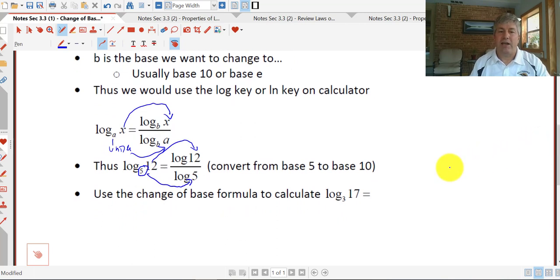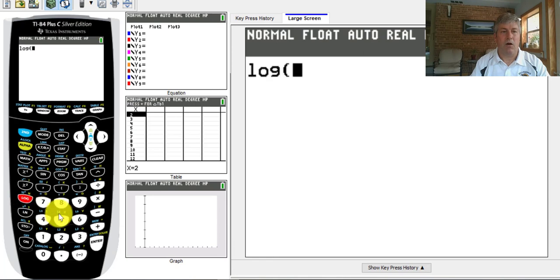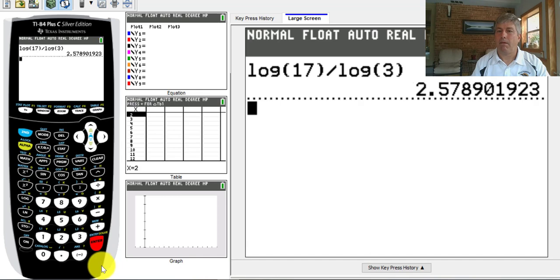If we wanted to use the change of base formula to convert log base 3 of 17 to find out what that is, we're just going to type into our calculator log 17 over log 3. So that's going to look like this: log 17, and close your parentheses, got to remember to do that, divided by log 3. And that value is 2.57.